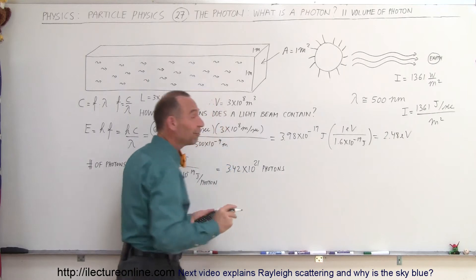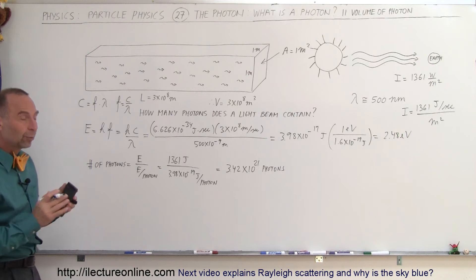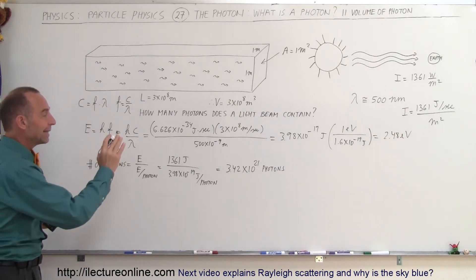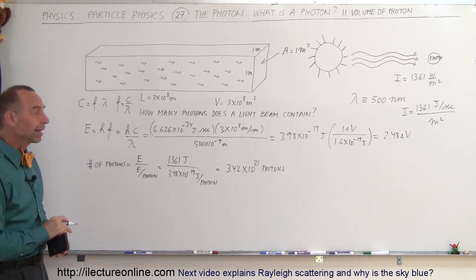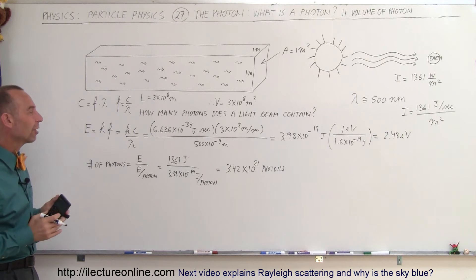So a beam of sunlight, one square meter in area, in cross-sectional area, that will strike the Earth in one second, that section of beam will carry that many photons. That's a lot of photons. But then how dense are the photons? How much space would be for each photon?